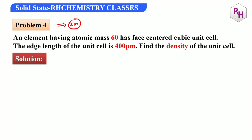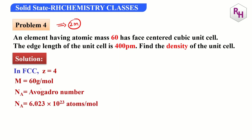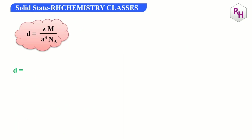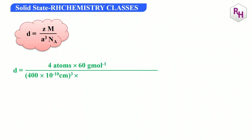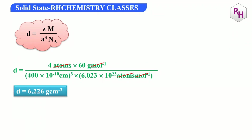First density problem: FCC structure, so Z = 4. Molar mass M = 60 g/mol. Edge length A = 400 pm = 400 × 10⁻¹⁰ cm. Substituting into density = ZM/(a³·NA): density = (4 × 60) / ((400 × 10⁻¹⁰)³ × 6.023 × 10²³). The answer is 6.226 g/cm³.